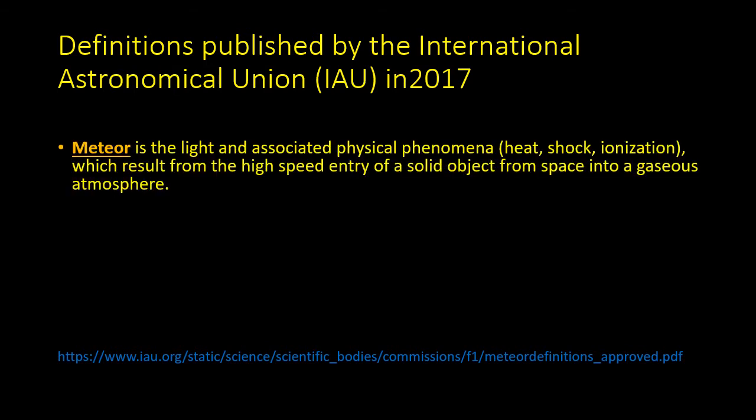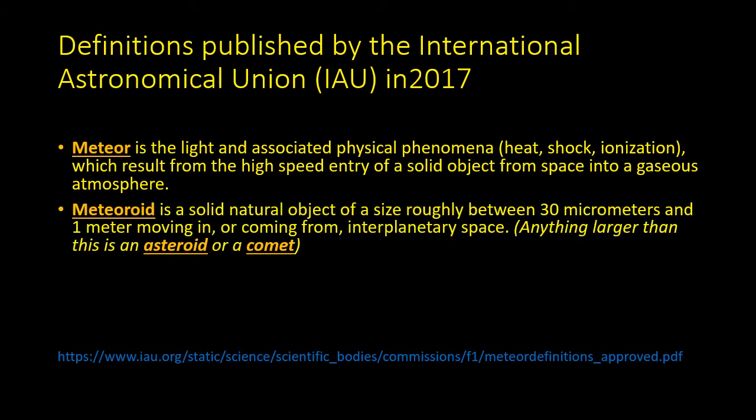It's worth stating exactly what we mean by a meteor, meteorite, meteoroid, and so on. A meteor is the light and associated phenomenon of the high-speed entry of a piece of rock or metal into our atmosphere. A meteoroid is a solid object between roughly 30 microns and a metre in diameter, moving in an orbit in interplanetary space.